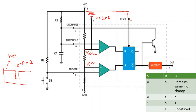Let us first assume that the output of the 555 timer is in its stable state, that is, the output is in the low or zero state. This means Q = 0 and Q-bar = 1. When Q-bar is 1, the NPN transistor acts as a short circuit. Now assume capacitor C1 is uncharged — there is no charge across it, so it is effectively connected to ground, giving zero at pin 6. At the upper comparator, the positive terminal (pin 6) is at zero and the negative terminal is at 2/3 VCC, so the comparator output R = 0.